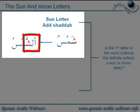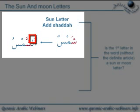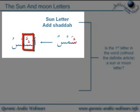So the first letter, the sheen, is a sun letter. When we prefix the word with the definite article 'al', we're going to add a shadda on the sheen. So 'shams' becomes effectively 'ash-shamsu'. This is important because we need to know how we read it. The letter with the shadda will always be joined to a previous sound. So instead of saying 'al-shamsu', we read this as 'ash-shamsu'. You'll notice in the script that when the shadda is added to the sun letter, they will not put a sukoon on top of the lam of the definite article.